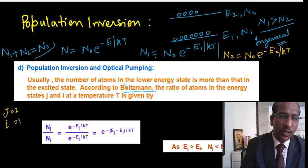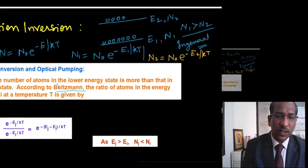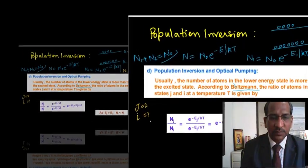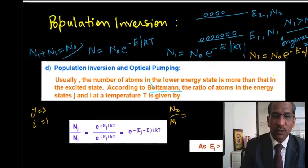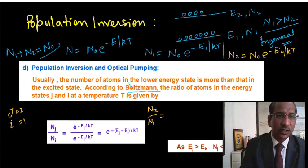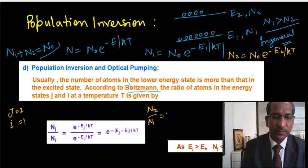So now if you have to write N2 upon N1, you can see here again N2 upon N1 equals, this N0 cancels out with this N0. So you have e raised to power minus E2 upon kT divided by e raised to power minus E1 upon kT.